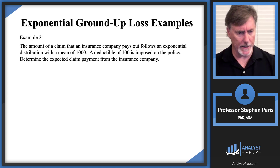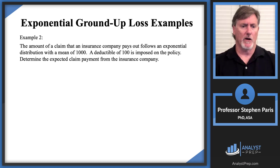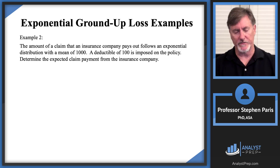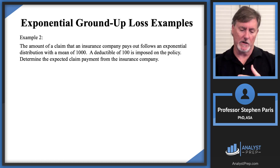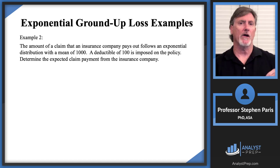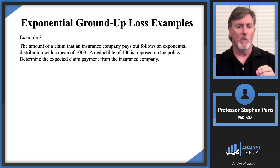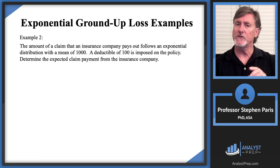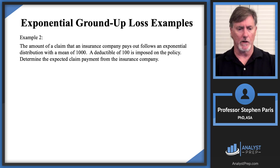Now let's look at a second example. The amount of a claim is exponential with a mean of 1,000 and a deductible of 100 is imposed. Determine the expected claim payment from the insurance company. When we have deductibles there are three random variables: the ground-up loss, the payment per loss, and the payment per payment. When a problem says 'expected claim payment from the insurance company,' it will always be the payment per loss random variable unless told otherwise.